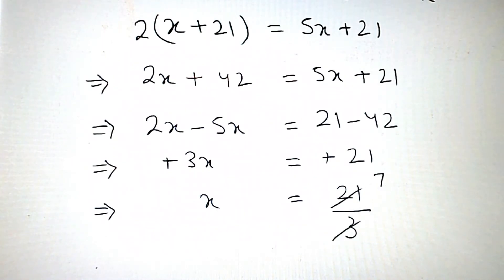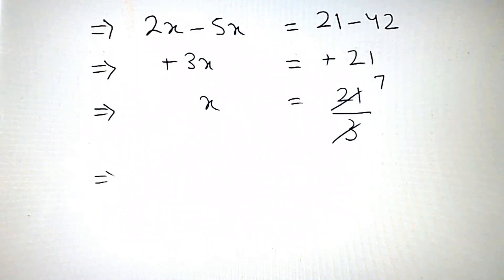So, 7 times it cancels. It means x value is 7.